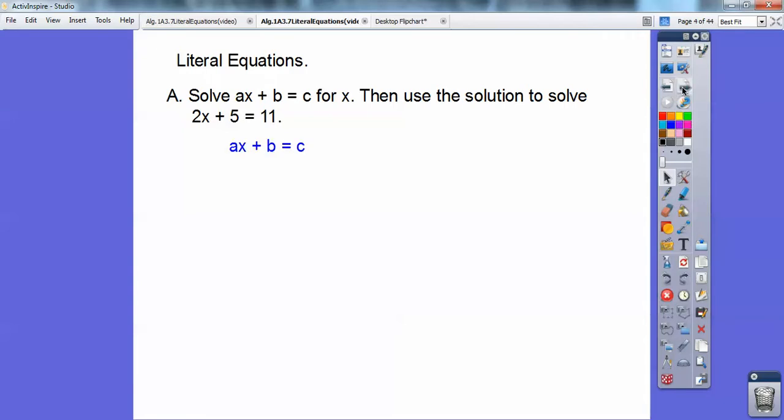Ax plus b equals c. Now when you solve equations, we do order of operations backwards. PEMDAS is backwards when you're solving equations. So I'm going to get rid of that plus b first and subtract b from both sides. And when I subtract b from both sides, the b's are going to cancel. And I'm left with ax equals c minus b.